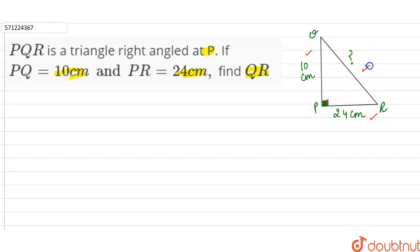So in any right angle triangle we can apply the Pythagorean theorem to find the third side of the triangle. What is Pythagorean theorem? Pythagorean theorem is hypotenuse square is equal to perpendicular square plus base square.